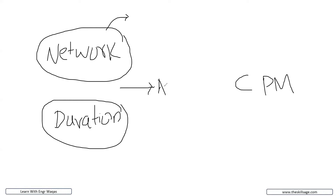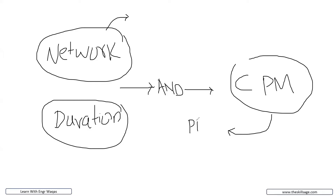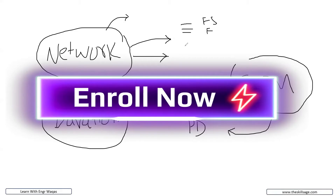We are going to make our activity network diagram and after that we are going to schedule our project to get CPM. Ultimately, CPM is going to define project duration. Today's session covers the activity network in detail. We have studied how to link activities with different relationships: finish-to-start, start-to-start, finish-to-finish, with predecessor and successor activities. Today we study how to interlink different work packages at the WBS level.